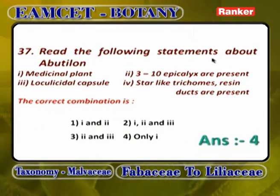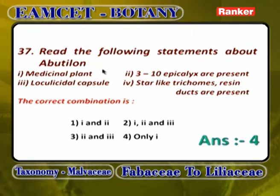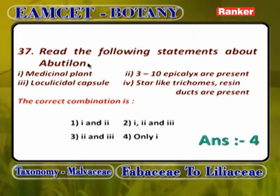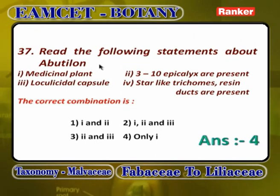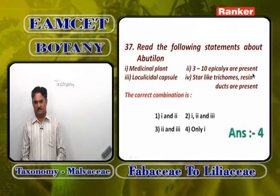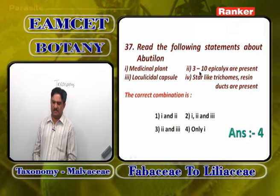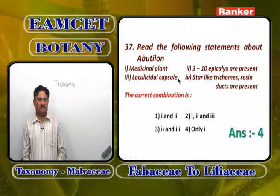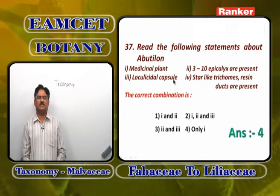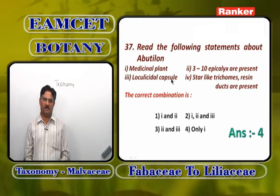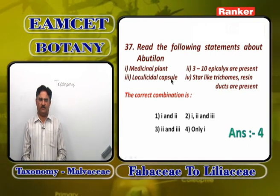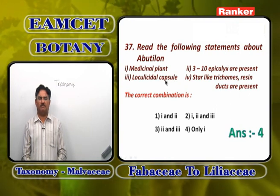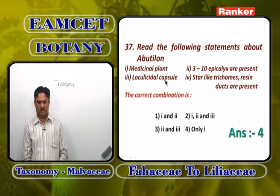Regarding Abutilon: it is a medicinal plant — correct. 3 to 10 epicalyx present — wrong, because in Abutilon epicalyx is absent. Loculicidal capsule — wrong, because in Abutilon the fruit is a schizocarp. Schizocarp is a fruit from a multicarpellary, syncarpous, multilocular, superior ovary that breaks into mericarps at maturity.